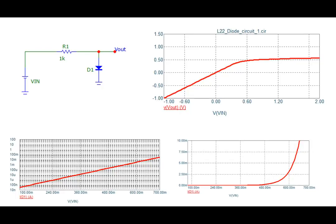If the current doubles to 10 milliamperes, the drop across R1 becomes 10V and the drop across the diode is about 0.65V, giving an overall input voltage of 10.65V. So when current goes from 5 to 10 milliamperes, the change in diode voltage is only a couple of tens of millivolts, because of the exponential characteristics of the diode.